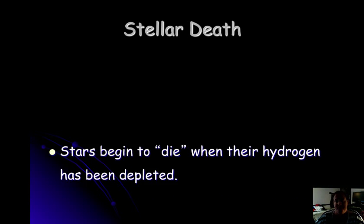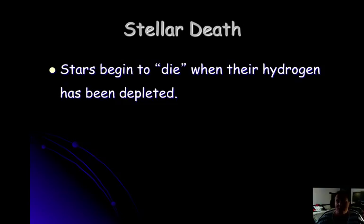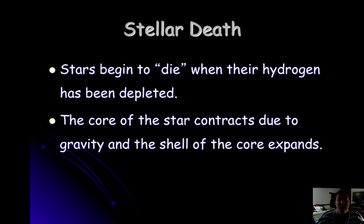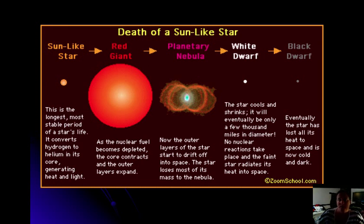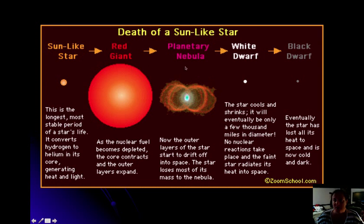Stars begin to die when they start to lose their hydrogen. Once they've depleted all their hydrogen, they are not able to engage in nuclear fusion. The core contracts while the shell expands. A sun-like star first expands into a red giant, then its outer layers drift off into space in what's called a planetary nebula. It then cools and shrinks into a white dwarf, and eventually loses all of its energy into space, becoming a black dwarf.